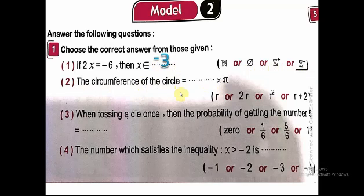Number 2: the circumference of a circle equals 2πr. He gave me π, so what is missing? 2r.